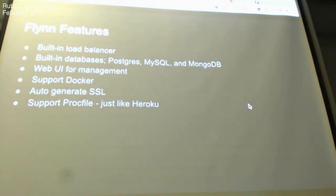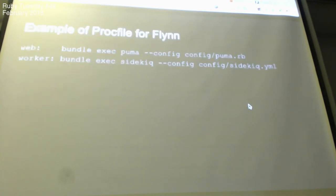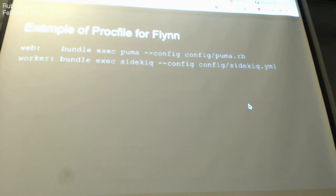Flim also supports Docker — you can push your Docker containers. It auto-generates SSL for you, I think using Let's Encrypt at the back. And it supports Procfile, just like Heroku. This is an example of a Procfile — you declare the processes your app has. Heroku detects the Procfile and runs the processes for you, and Flim does the same.